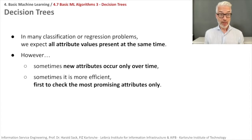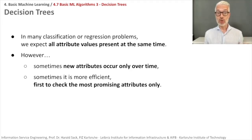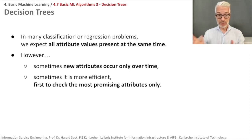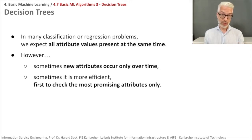In general, in many classification or regression problems, we expect all attribute values present at the same time. However, two things might occur. New attributes might occur only over time so that you don't have all attributes available at once — you have to test one after the other. And sometimes it might be more efficient or beneficial for your patient to first check the most promising attributes or features only.